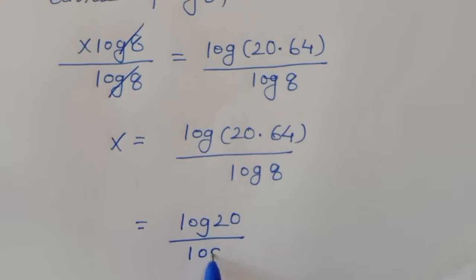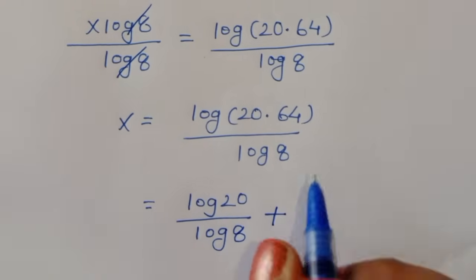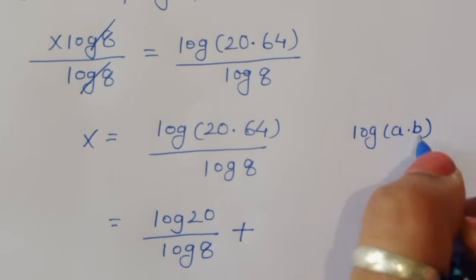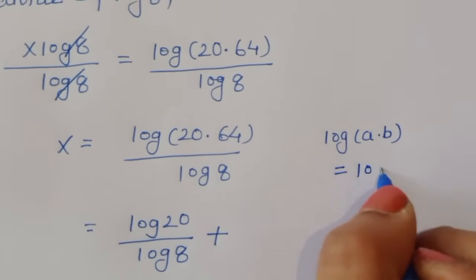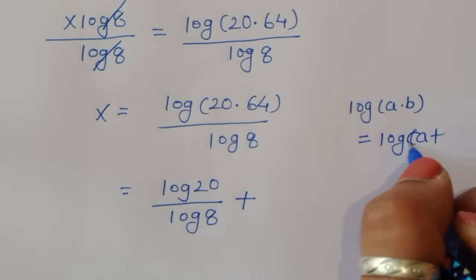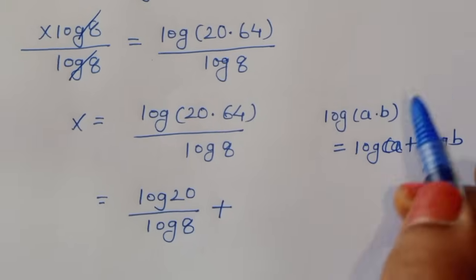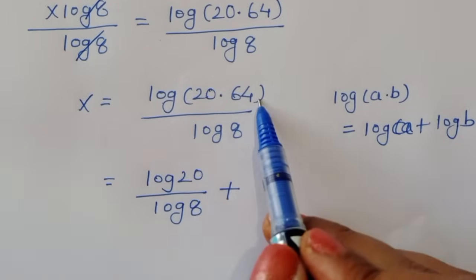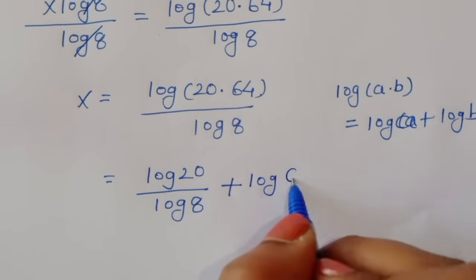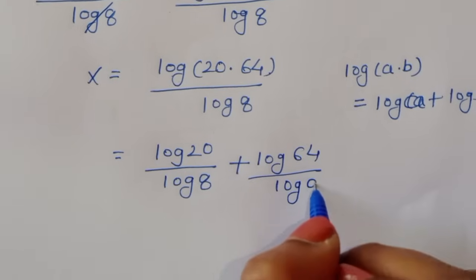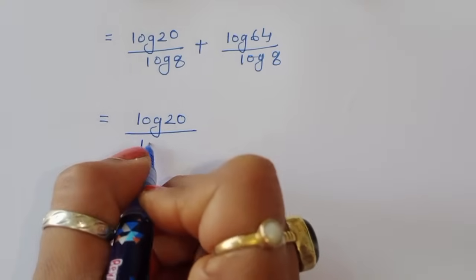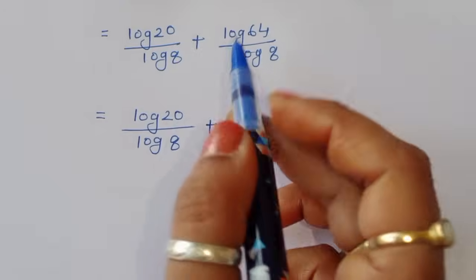Now we apply the formula: log of a times b is equal to log of a plus log of b. So log of 20 times 64 becomes log of 20 plus log of 64. We can now separate the terms: log of 20 plus log of 64, all divided by log of 8.